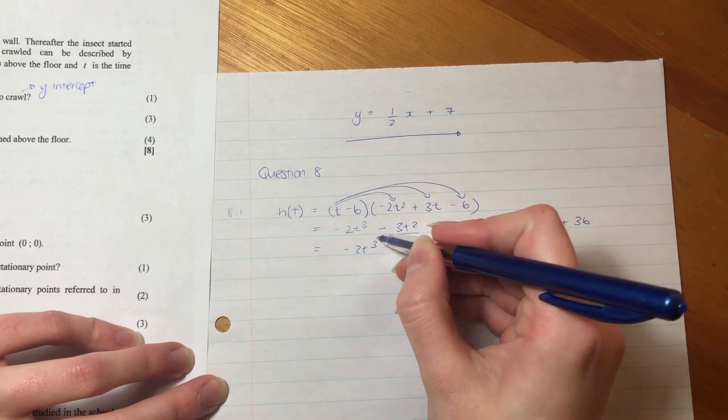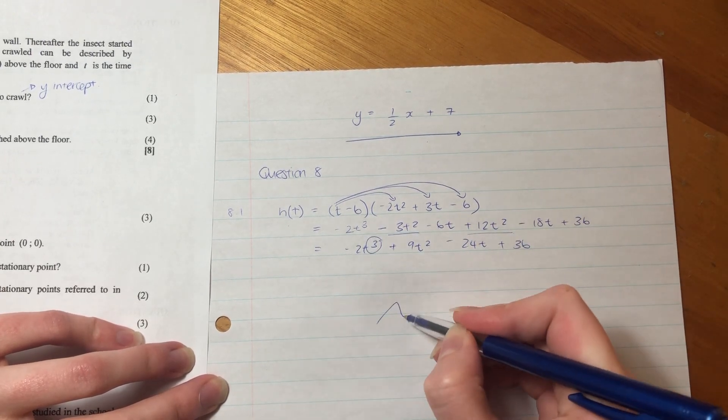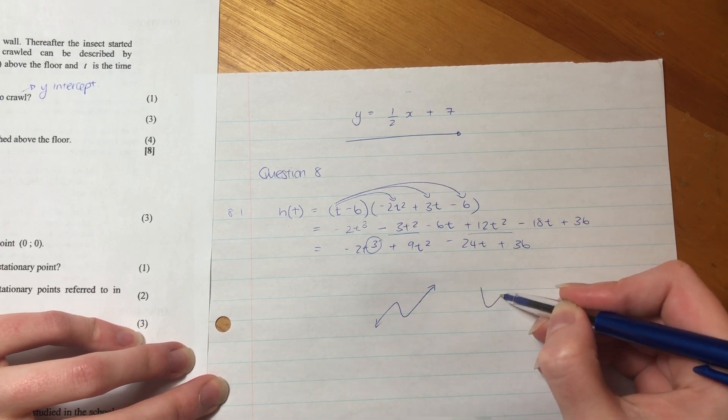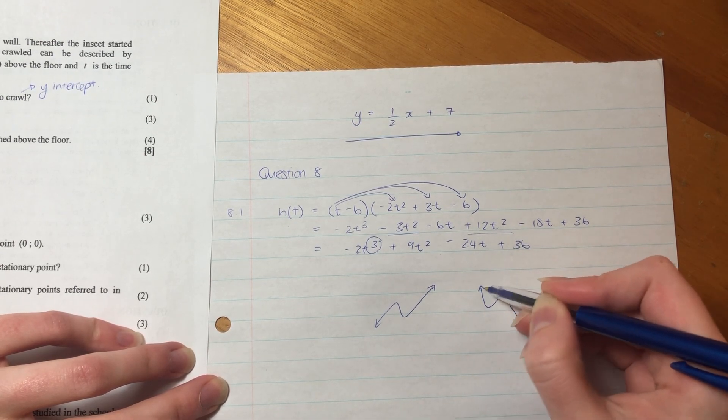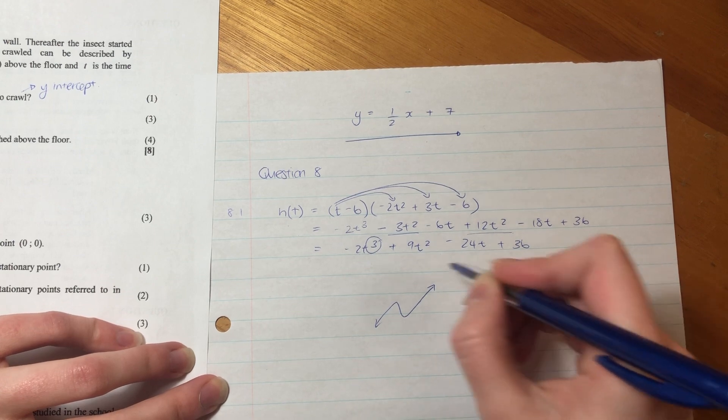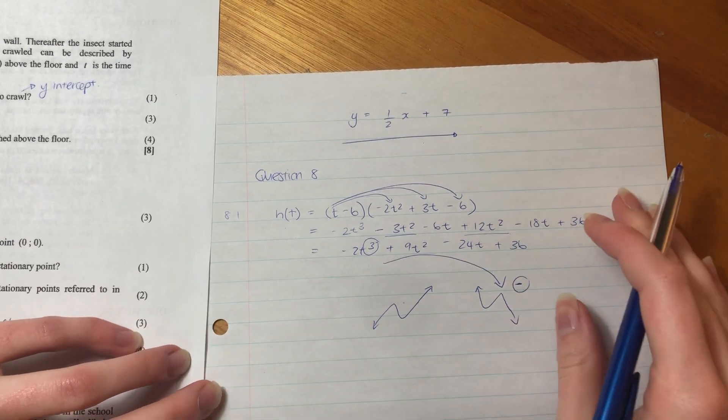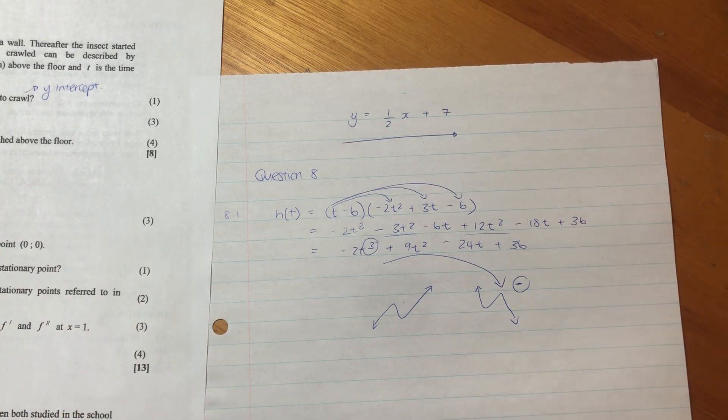Let's just quickly simplify it so that we know what's going on. Remember, we always look for like terms. So here it would be plus 9T squared, then we have negative 24T, and then we have plus 36. So the reason it's cubic is because the highest degree is 3. And remember, cubic graphs look like this. That's a positive one, or they can look like that. That's a negative one.